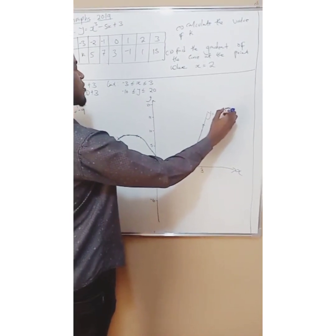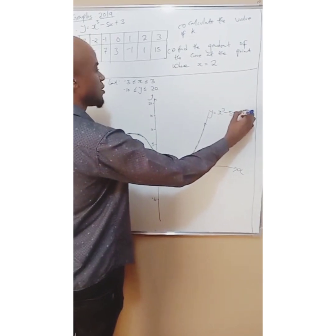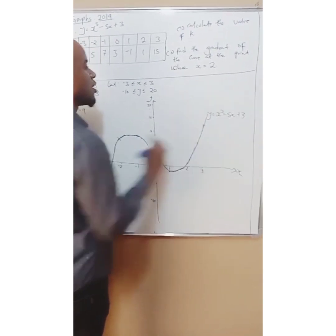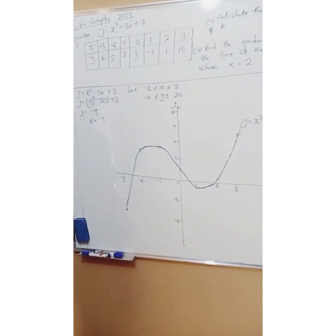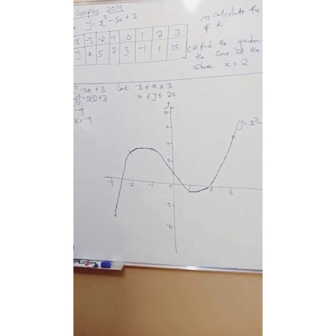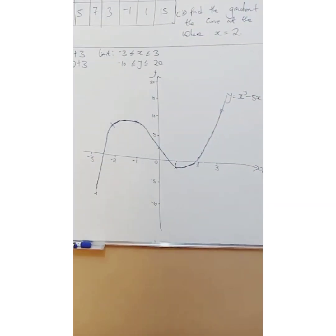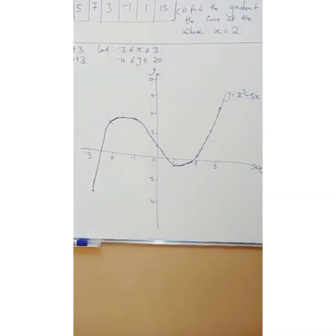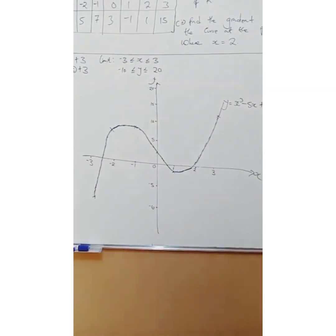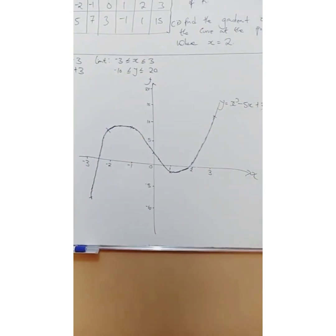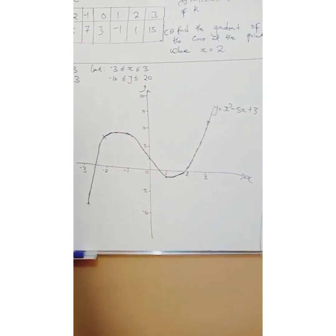Once you have your smooth curve, label it. Write: y = x³ − 5x + 3 next to the curve. Simple as that — you have your three marks for plotting. That is how you plot a cubic graph.